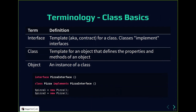We're going to start at the beginning with some terminology — these are the basics. Object-oriented programming is built on these basic terms. An interface is a template for a class — it's also considered a contract for the class. An interface tells a class what methods it must implement. A class is a template for an object, and is the actual implementation of an interface. An object is an instance of a class. Here in this little example, we define a simple interface, a class that implements it, and we can create new separate instances of the pizza class.